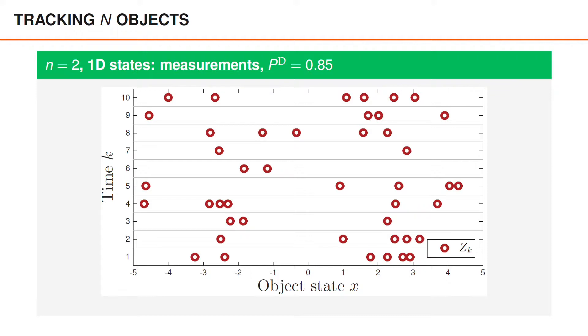If we simulate these models, we can for example get the sequences of detections shown here. This is what we will process with a GNN filter in order to compute posterior densities and object estimates.